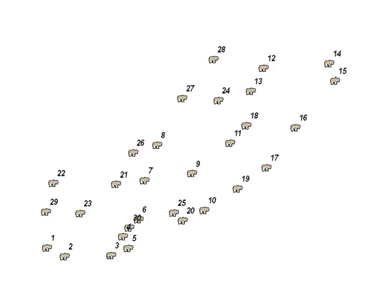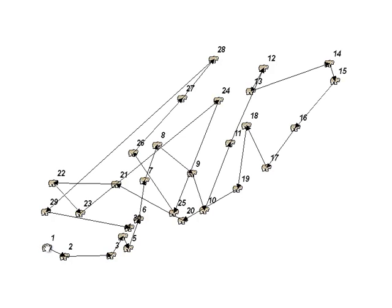For example, here are animal location points and what we want to know is the distance traveled between points. Here's the first location and here's the second location — what's the distance traveled to go from point 1 to point 2, and then store that distance in a field for each point starting with point 2. That's the basic problem: what's the distance traveled between points.